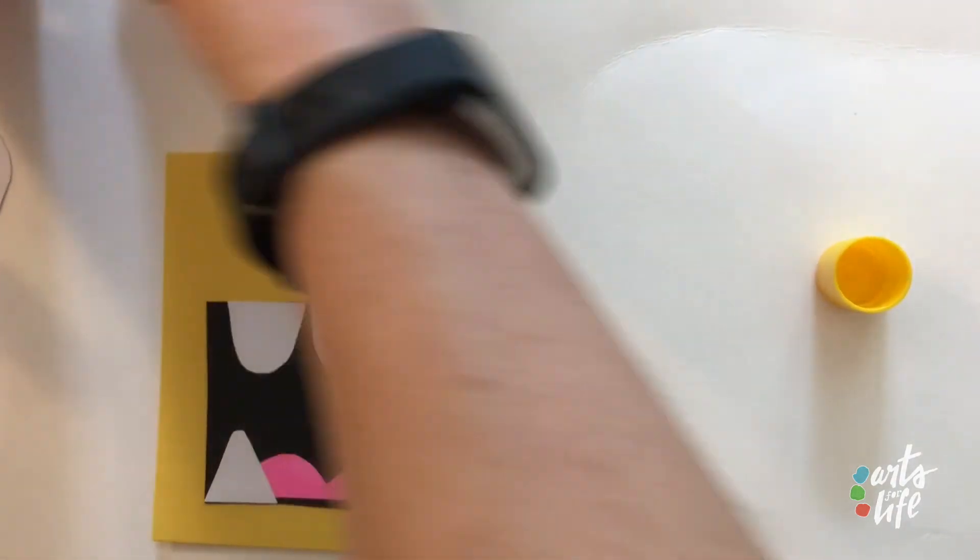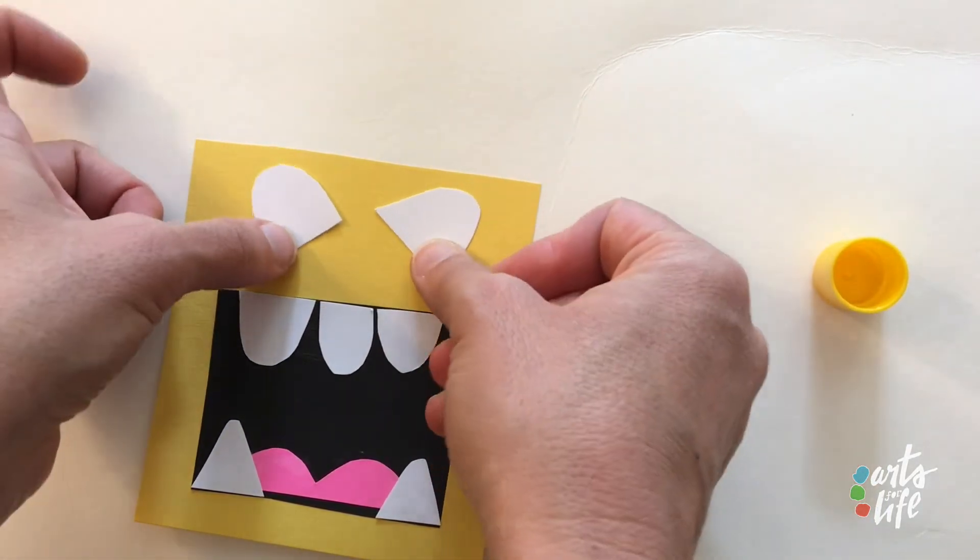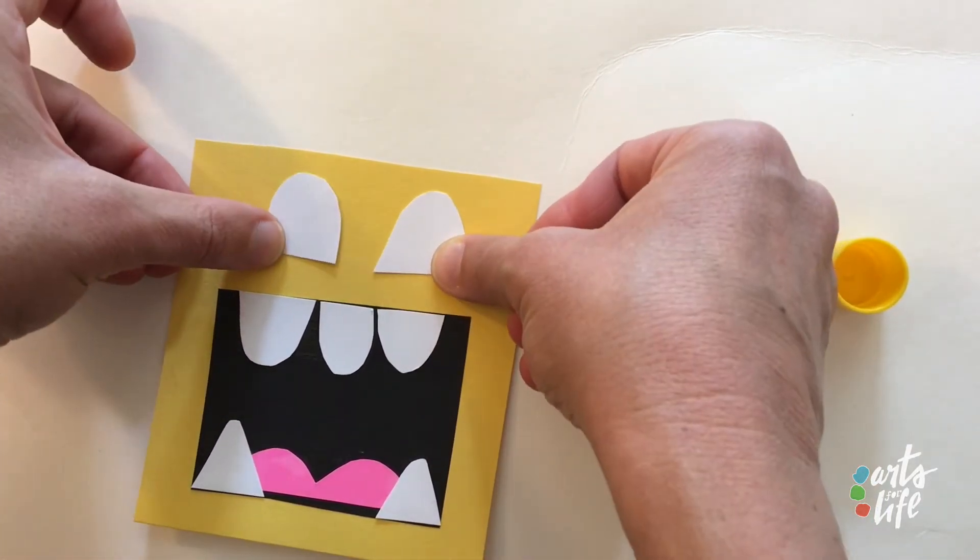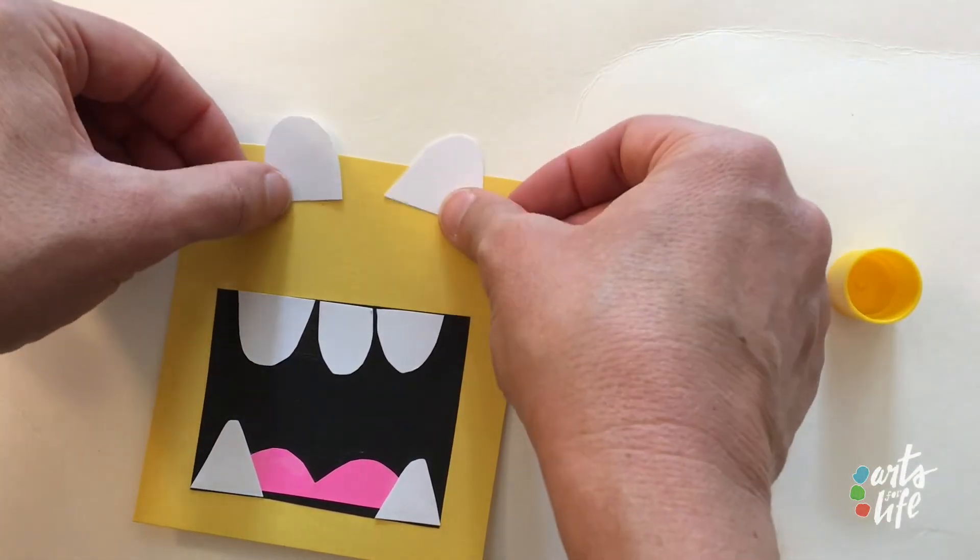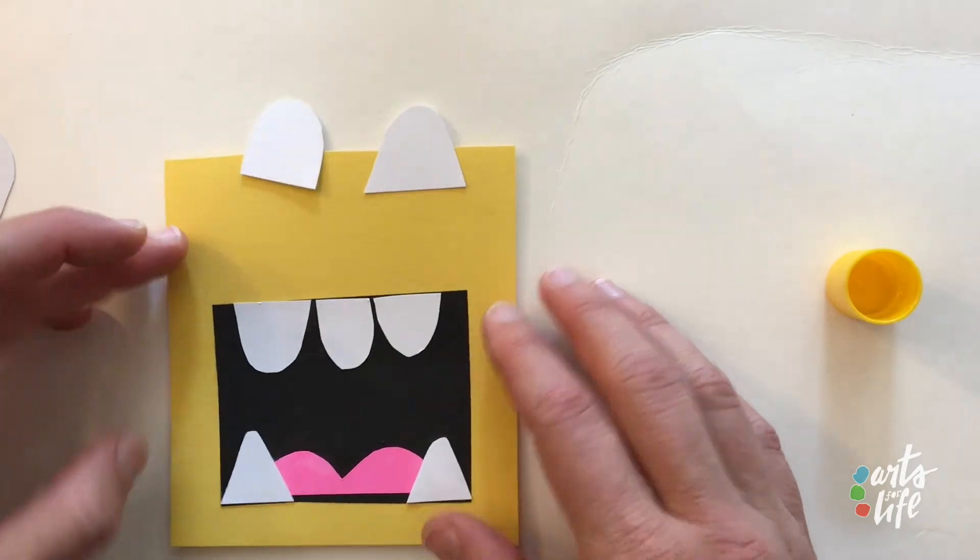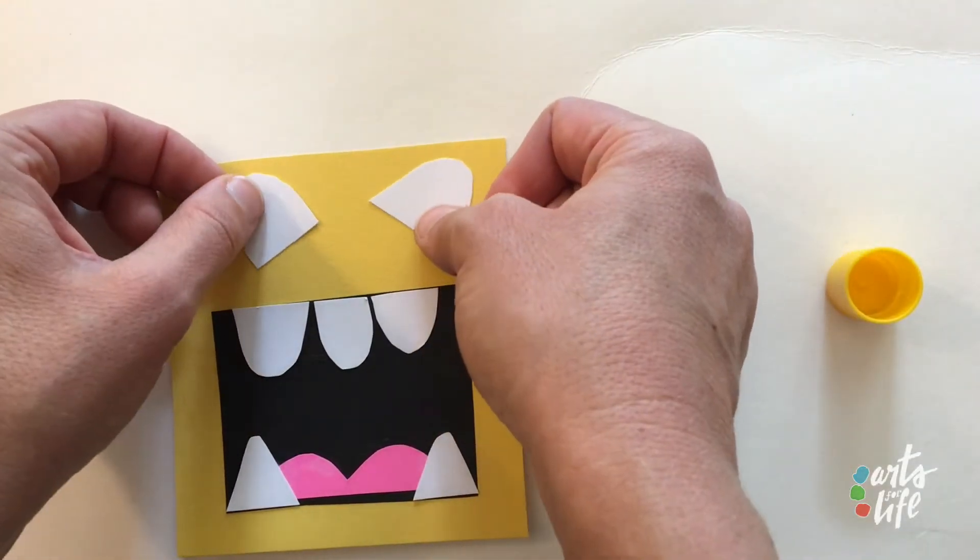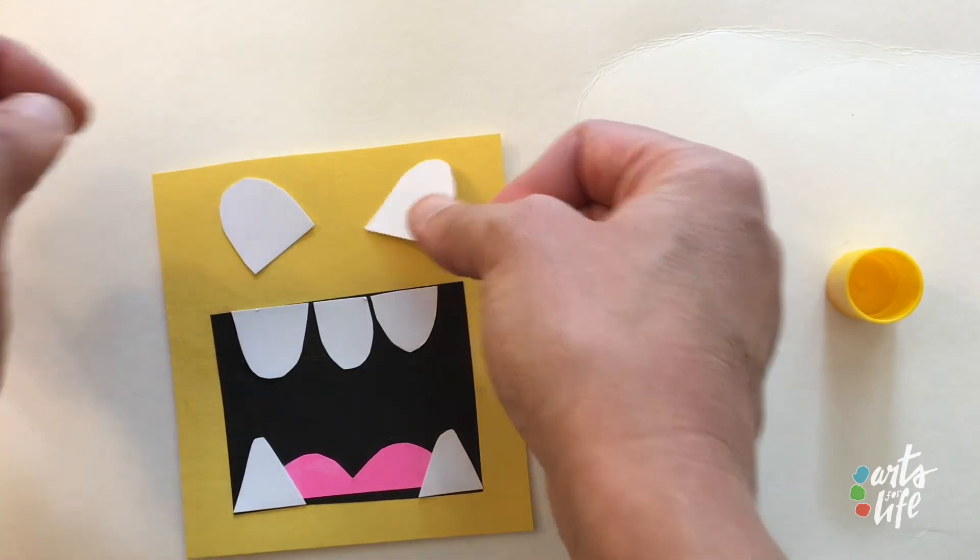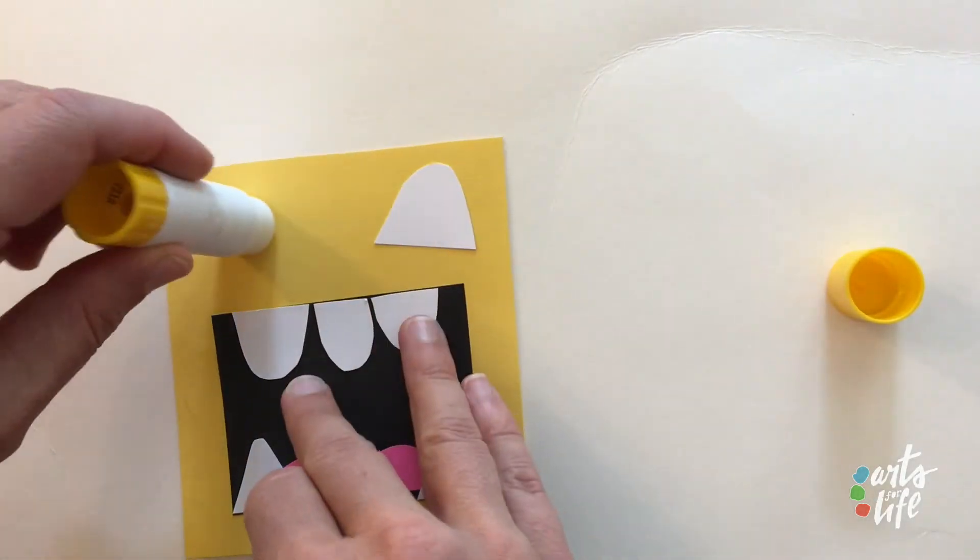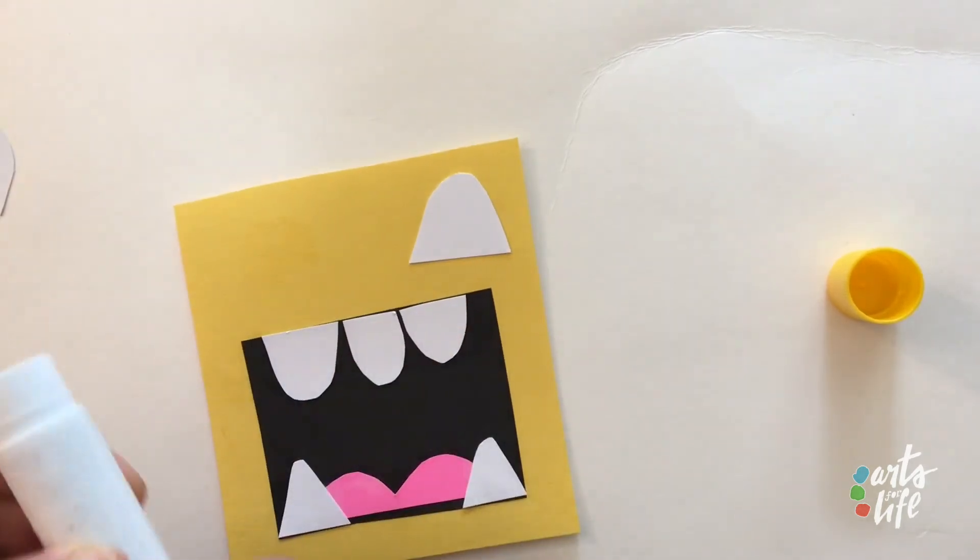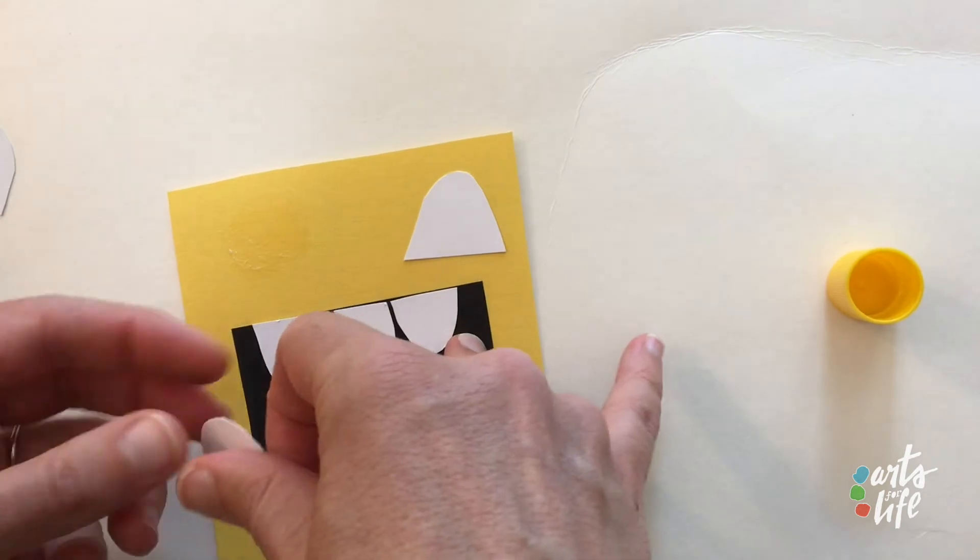All right. Then we can put eyes just anywhere. You can slant them for different expressions. Make them go in. You can make it scary. You can make it funny. Let's see where I want mine. I think I want mine to slant out a little bit because it really looks like it's yelling then. Put plenty of glue.